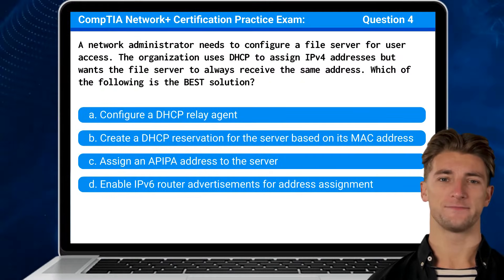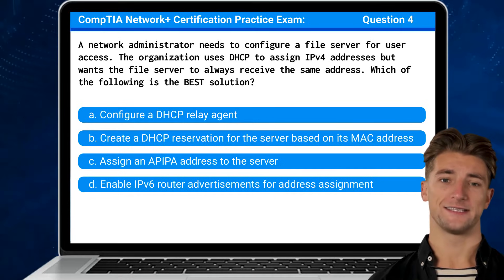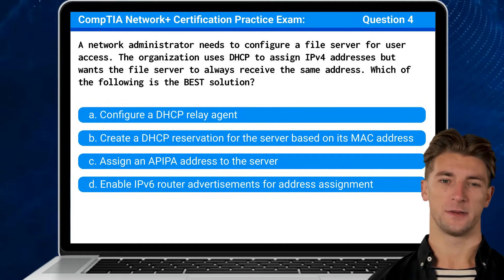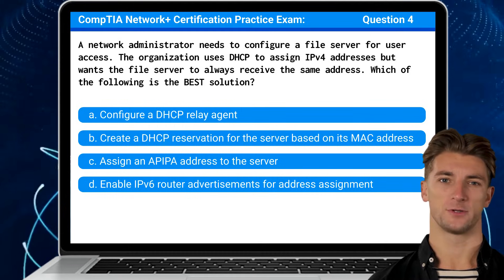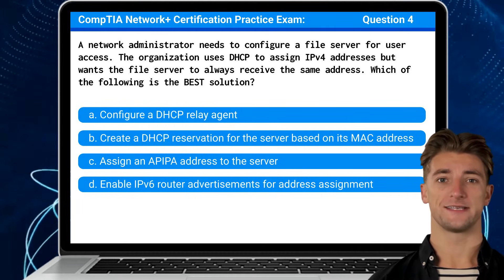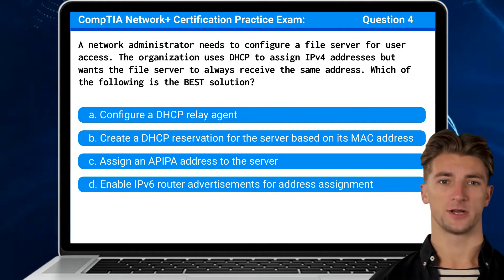Question 4. A network administrator needs to configure a file server for user access. The organization uses DHCP to assign IPv4 addresses, but wants the file server to always receive the same address. Which of the following is the best solution?